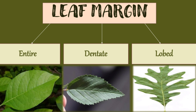The leaf margin can be entire, dented, or lobed. The entire one is a complete smooth margin. The dented one has a crisscross-like pattern. The lobed one is completely divided into a finger-like structure.